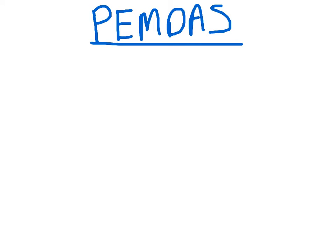The P stands for parentheses. The E stands for exponent. The M stands for multiplication. Sorry.